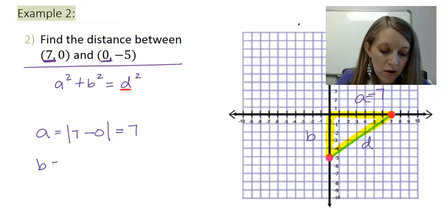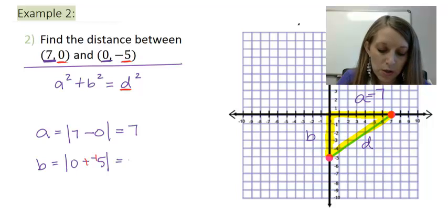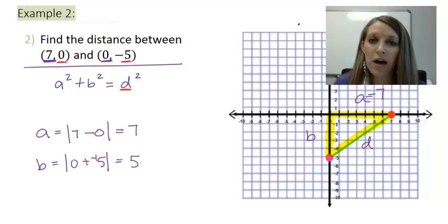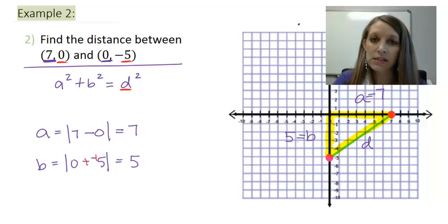Same thing with B. The formula is the difference between my two y values, 0 and -5. And so, the difference between those two and absolute value of that is 5. So, my B distance is 5. And again, that makes sense because I am 5 units away from the origin. So, now that I know my A and my B distance, I can use that in this equation to solve for what my D distance is.